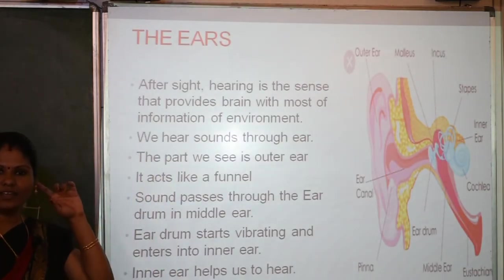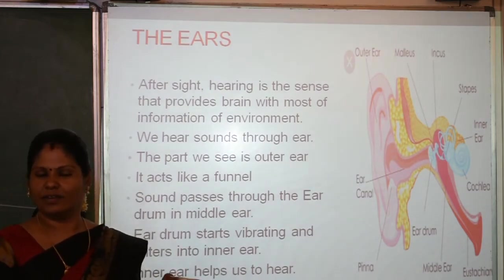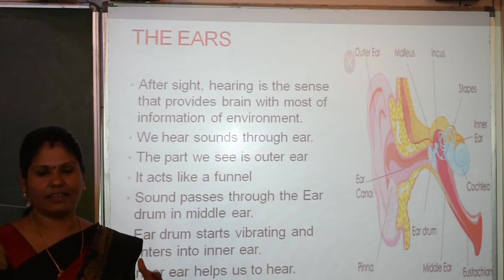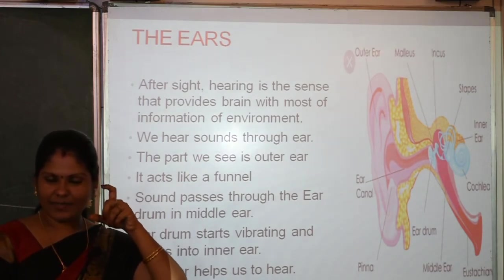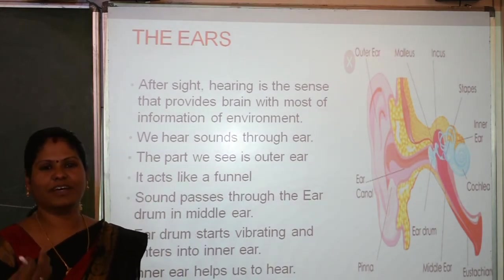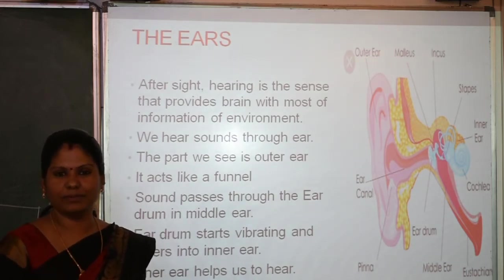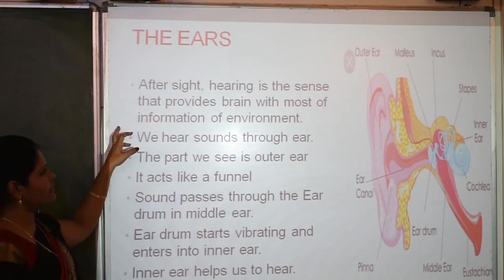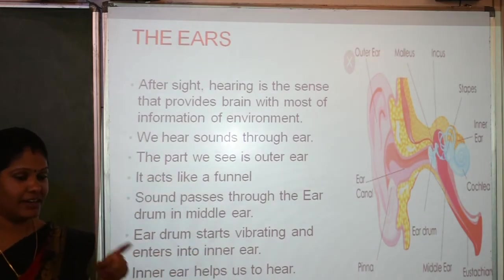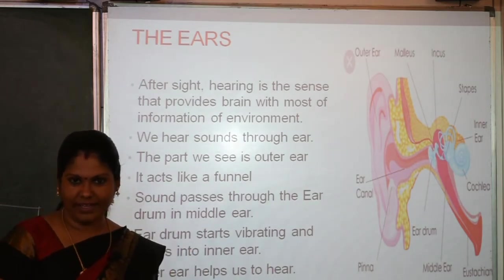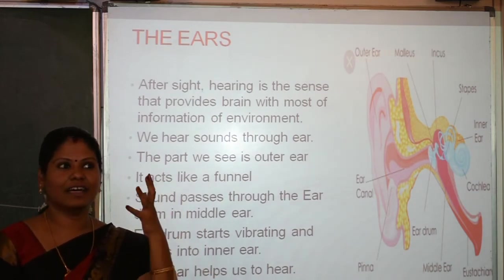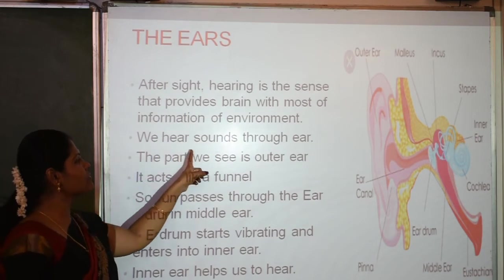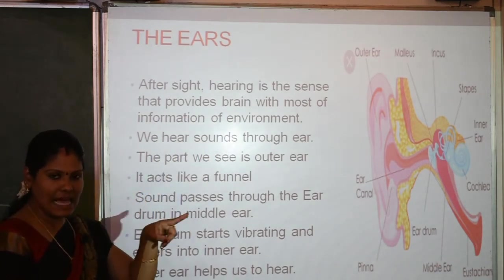The next sense organ is the ears. Ears help us to hear whether it is a pleasant sound, a bad sound, or something very noisy. Once you hear a sound — like a song — the ear nerves send the message to the brain. The motor nerves help us to move our hands and legs in response. After sight, hearing is the sense that provides the brain with the most information about the environment.